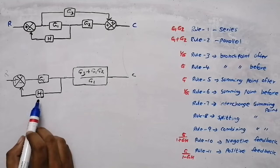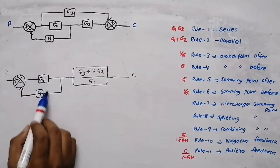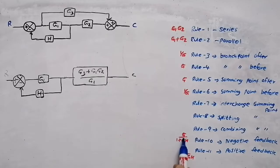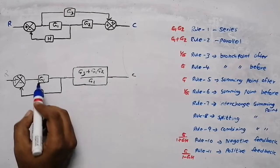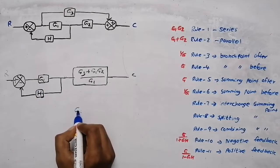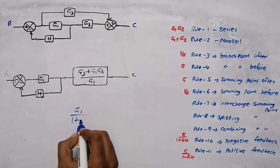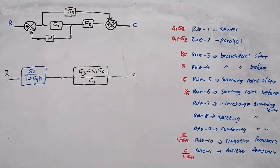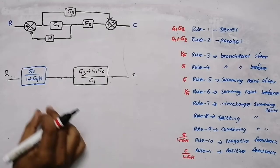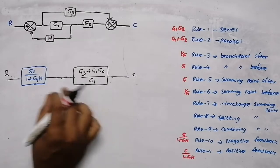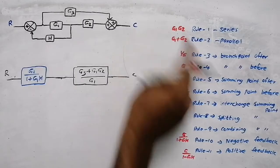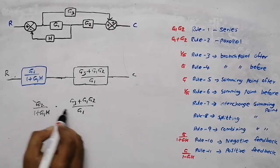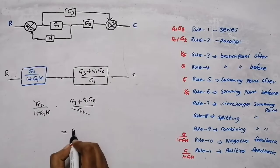The summing point got eliminated. The blocks were in parallel, we added them, and we got this single block. Now as you can see, this network is in negative feedback. For negative feedback the formula is G divided by (1 + GH), so G is G1, giving G1 divided by (1 + G1H).